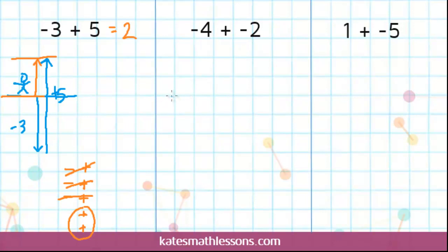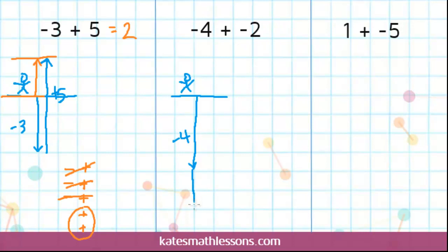Let's draw a picture to help us visualize this. Here you are standing at ground level. This negative 4, you could think about that as going down 4 units into the ground: 1, 2, 3, 4 — so you went 4 units down. And you're adding a negative, more negatives, so you're going down 2 more units into the ground. When you give your answer, you always want to think about where you started and where you ended up. You started here at ground level and you ended up way down here — you ended up going down a total of 6 units. So your answer would be negative 6.